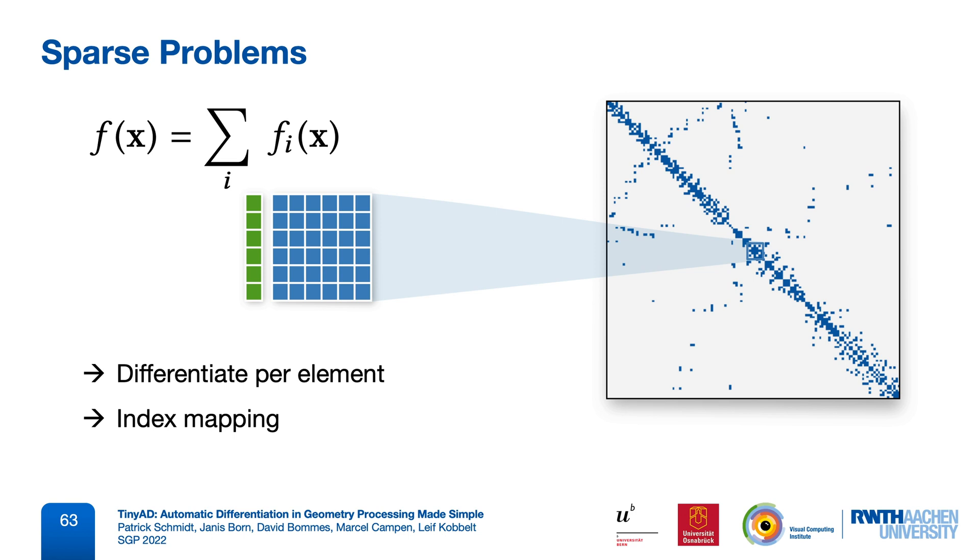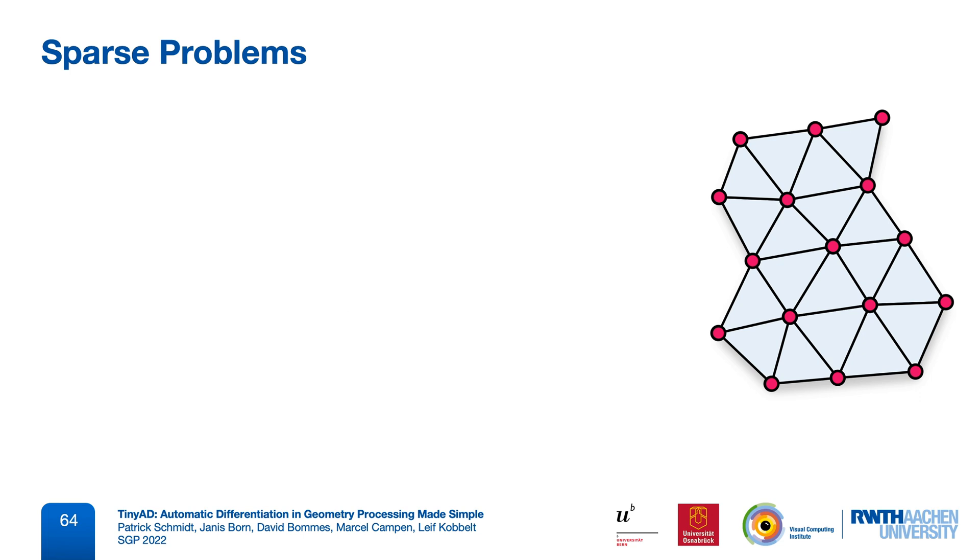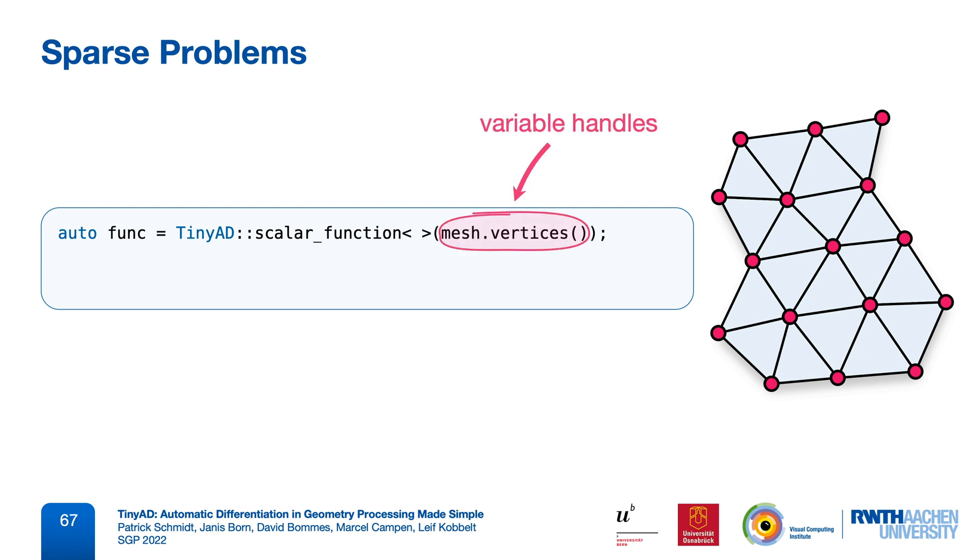For this, we use the notions of variable handles – these could be the vertices of our mesh – and element handles – these could be the triangles. But both of these choices are flexible. We could choose a completely different set of variables and any other kind of local stencils as elements. For now, let's assume that we want to map a triangle mesh to the plane. We start by constructing a TinyAD scalar function, and pass a list of variable handles.